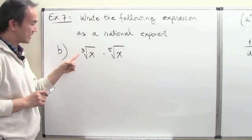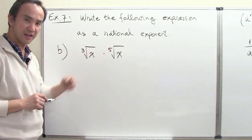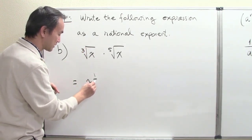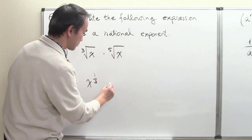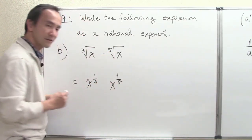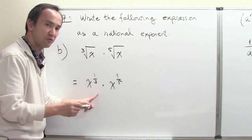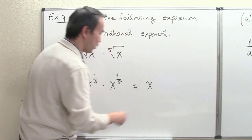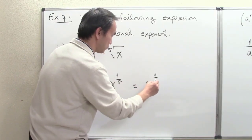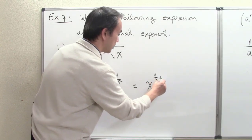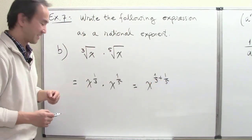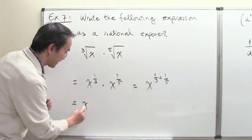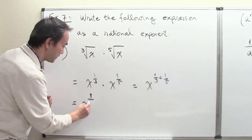Part B: the cube root of x times the fifth root of x. The cube root of x is x to the 1 third power; the fifth root of x is x to the 1 fifth power. Multiplying with the same base, we combine: x to the power 1 third plus 1 fifth. Finding a common denominator, 1 third plus 1 fifth equals 8 fifteenths. So the answer is x to the 8 fifteenths power.